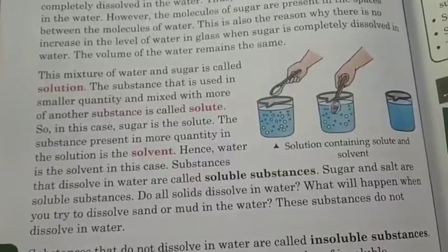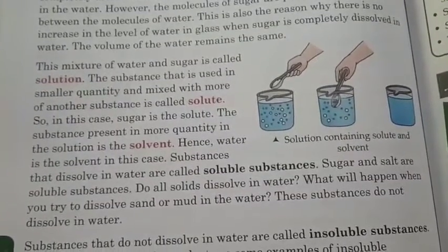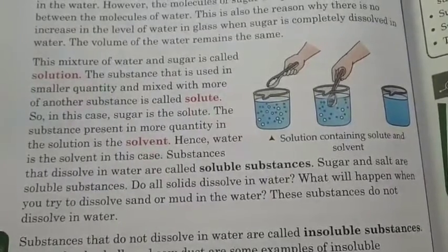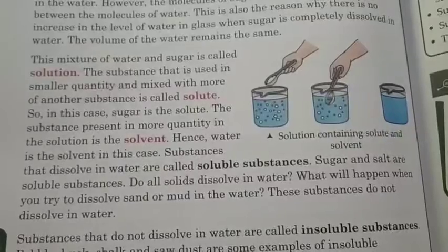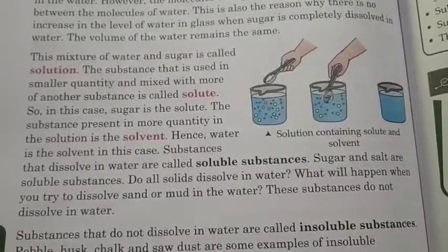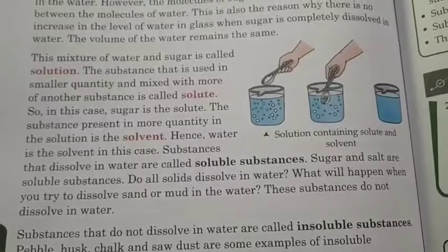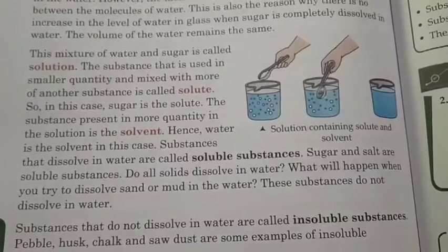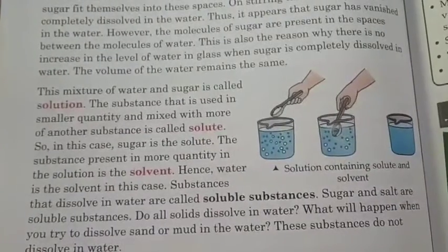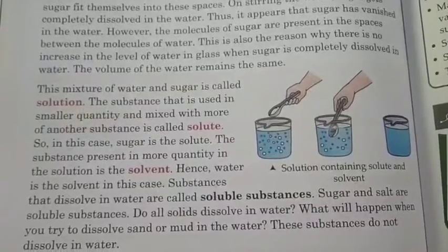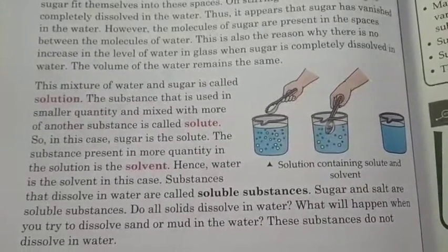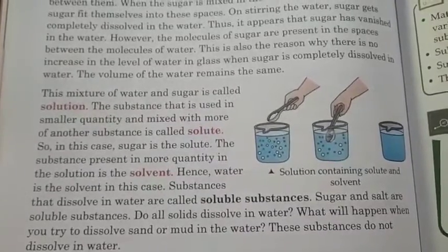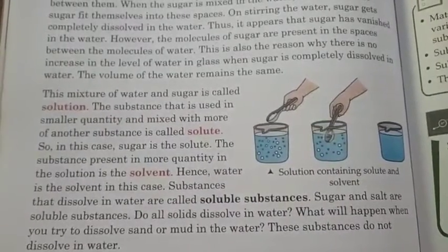This mixture of water and sugar is called a solution. The substance that is used in small quantity and mixed with another substance is called solute. So in this case, sugar is the solute. The substance present in more quantity in the solution is the solvent. अगर हम थोड़ी सी ही quantity में sugar मिलाएंगे पानी में तो वो होगा solute, और अगर ज़्यादा quantity में मिला देंगे तो वो हो जाएगा solvent.